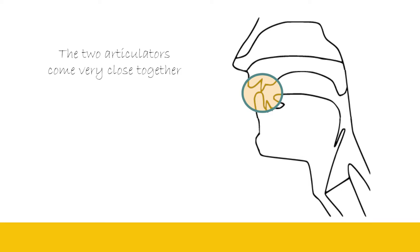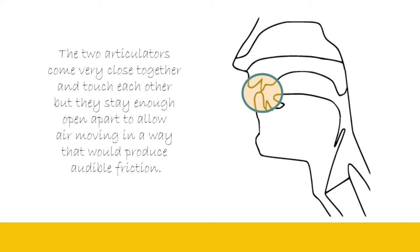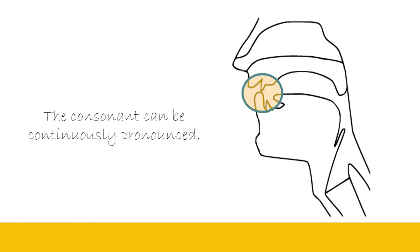When you articulate a fricative sound, the two articulators involved in the production of that particular fricative come very close together and touch each other. So far it's similar to plosives, because they come close to each other and they touch each other. But they don't press hard on each other. They stay open enough apart to allow air moving in a way that produces audible friction or frication between the two articulators, through which the consonant can be continuously pronounced.